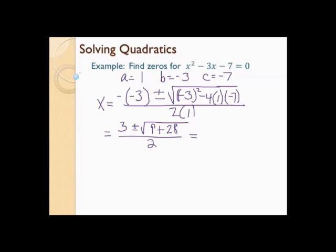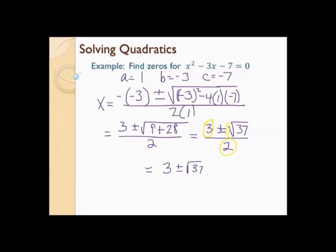You may end up doing the radicand — the thing under the radical — in your calculator, but I'm showing you how to do it without. So 3 plus or minus, 9 plus 28 is 37, all over 2. 37 is a prime number — I can't multiply any numbers other than 1 and 37 to get 37, so that's as simple as the radical can get. There's nothing I can take out of the 3, the 1, and the 2 together, so my final answer is 3 plus or minus the square root of 37 all over 2.